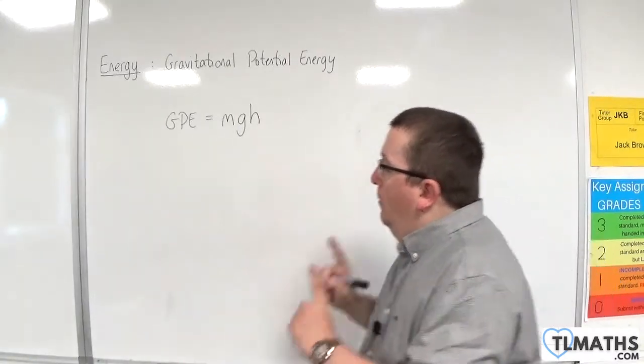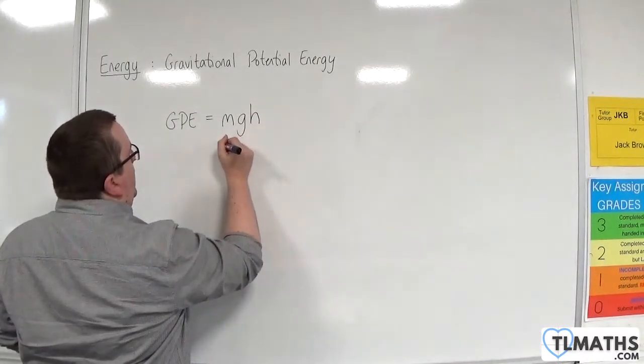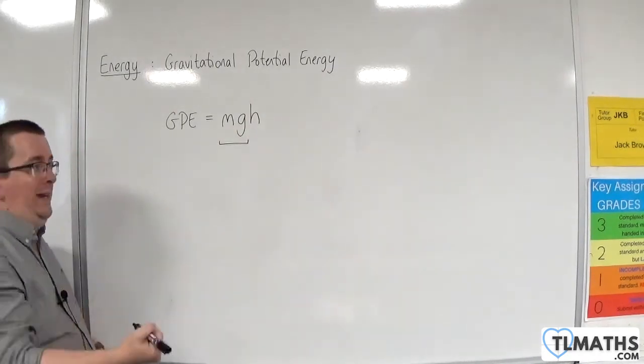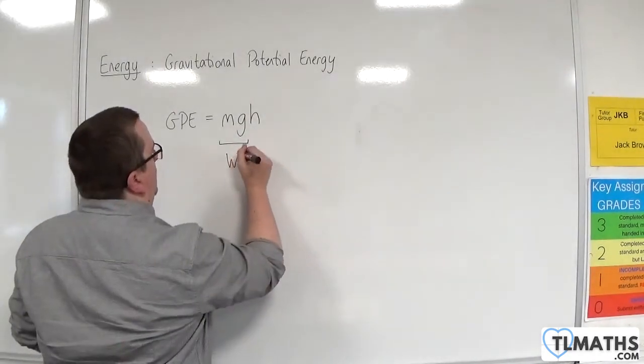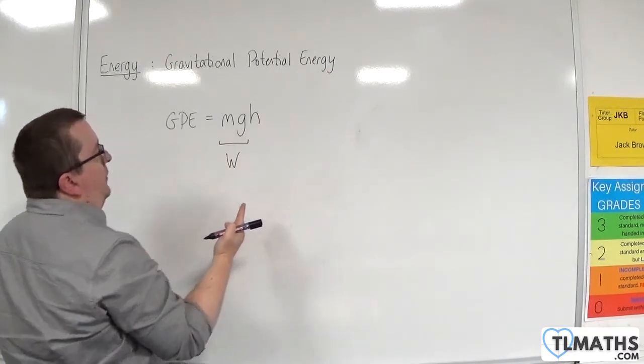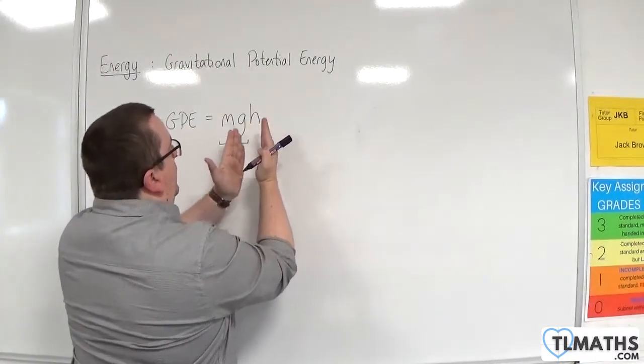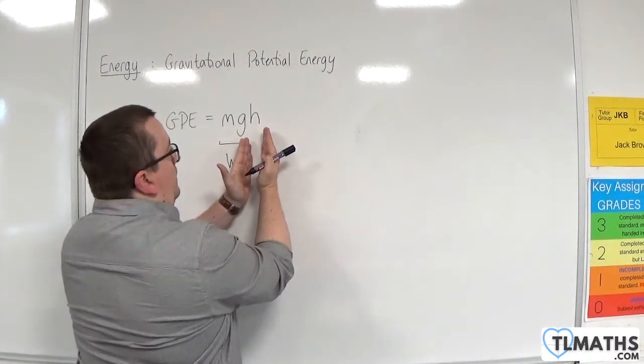Now, what you might notice from this formula is that we have mg, which you may recognise as weight, times by h, which is a distance. So, again, we have this idea that it is a force times by a distance.